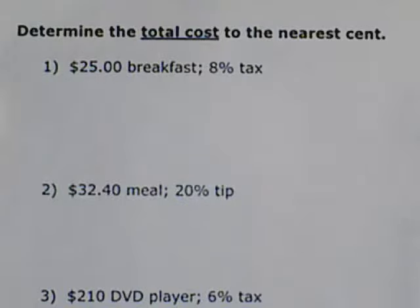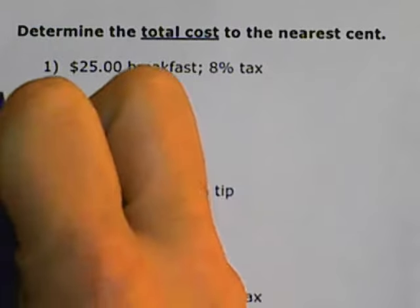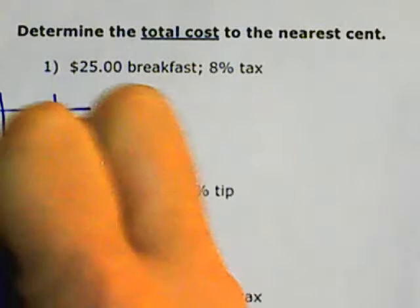Number 1, to determine the total cost to the nearest cent, we will set up a proportional table.